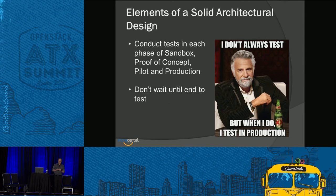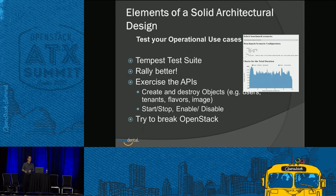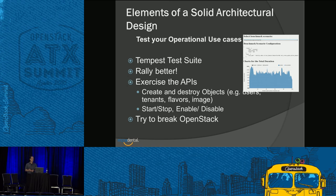Very important at each level — sandbox, proof of concept, pilot, and production — is to do testing at each level. Don't wait until the end to do all your testing; you'll find you've made a lot of mistakes and things don't work, and you'll have to go back on phases and explain to management why you need two more months. There are very good tools for testing operational use cases: Tempest is one of the best, Rally is even better — it uses Tempest, has a UI, and produces better graphs instead of text output. Exercise all the APIs possible on the system. Try to break OpenStack — we haven't had a lot of success with that, actually.